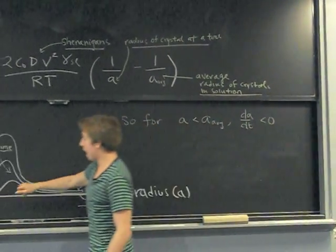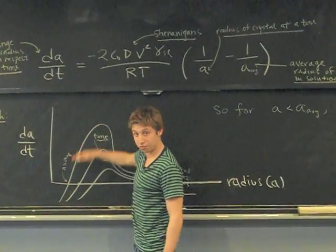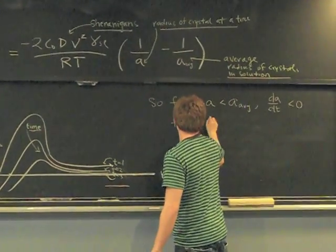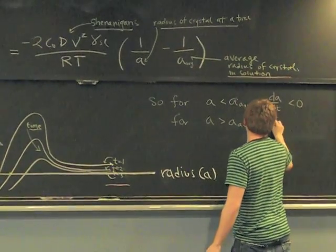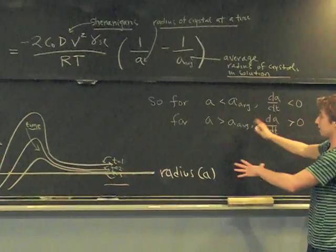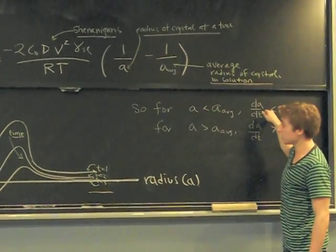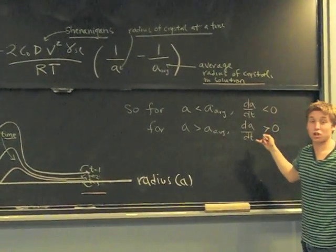Now let's look at when a is greater than a average. This term is positive. You can see it's in the first quadrant. So that means for a greater than a average, dA dt is greater than zero. That's it. So basically small crystals shrink, negative term here. Large crystals grow. And that's Oswald ripening for you.